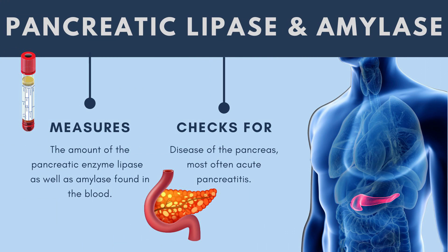Two other tests that must be ordered specially are pancreatic lipase and pancreatic amylase. If a doctor suspects pancreatitis, these measure pancreatic enzymes in the blood. Elevated levels can indicate acute pancreatitis, which is dangerous and can cause death or serious harm in up to 10% of cases, and may also point toward pancreatic cancer. These are important to check when someone has unexplained abdominal symptoms.